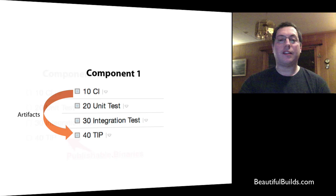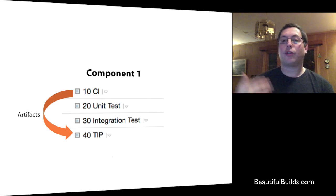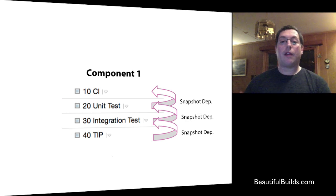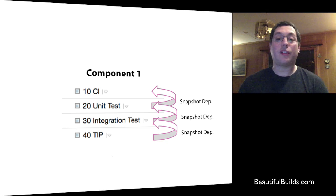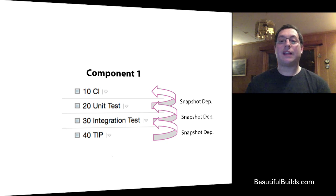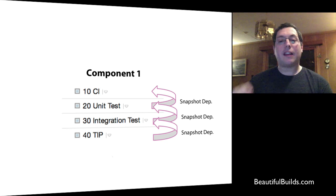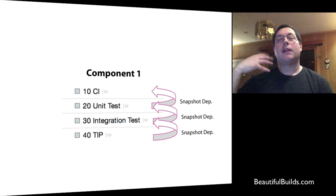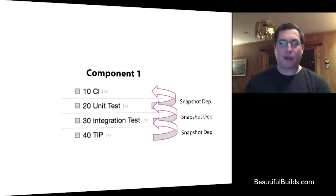A tip configuration takes artifacts directly from the CI after compilation, but it also ensures that the binaries it publishes have gone through the entire process. We might have multiple snapshot dependencies inside a component: tip has a snapshot dependency on integration test, so triggering a tip build will trigger integration test first if code has changed, then integration triggers unit test, and unit test triggers CI. So clicking the tip configuration may trigger CI, unit test, and integration tests before tip can publish anything — that's exactly what we want.